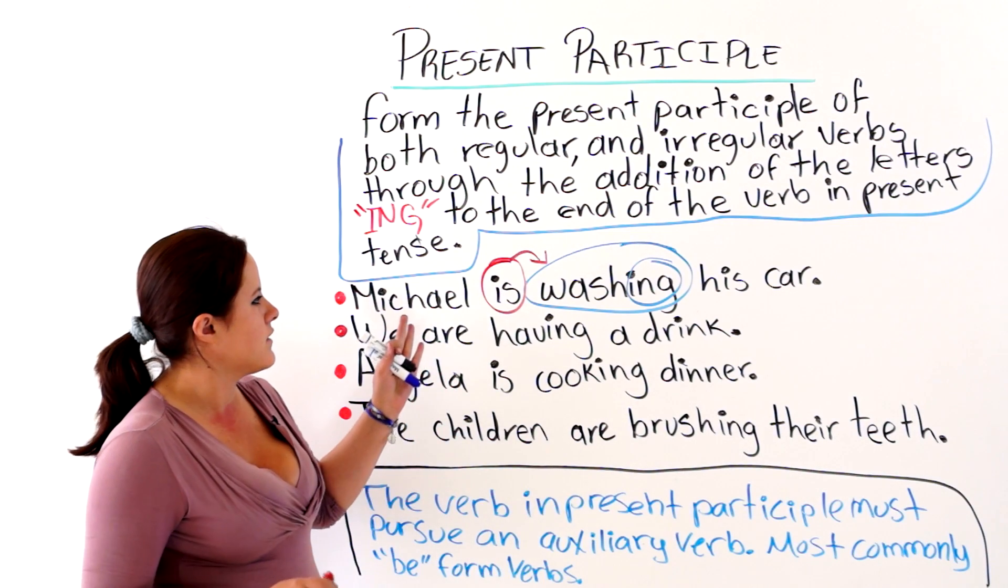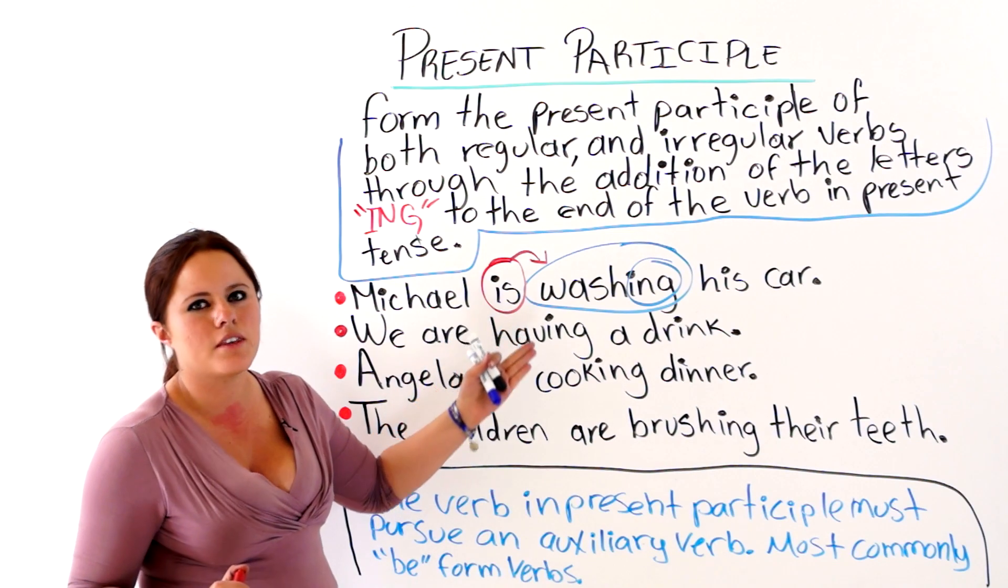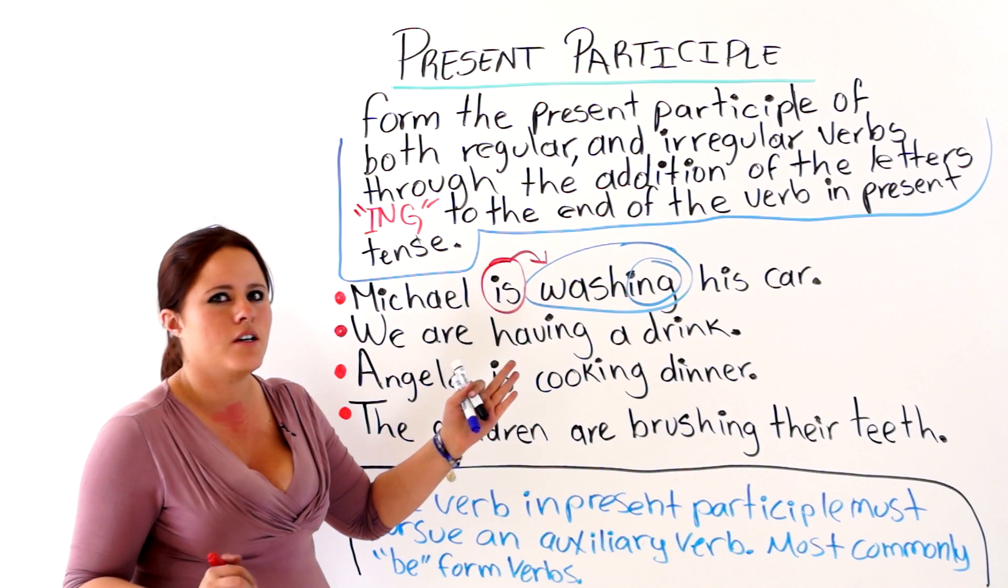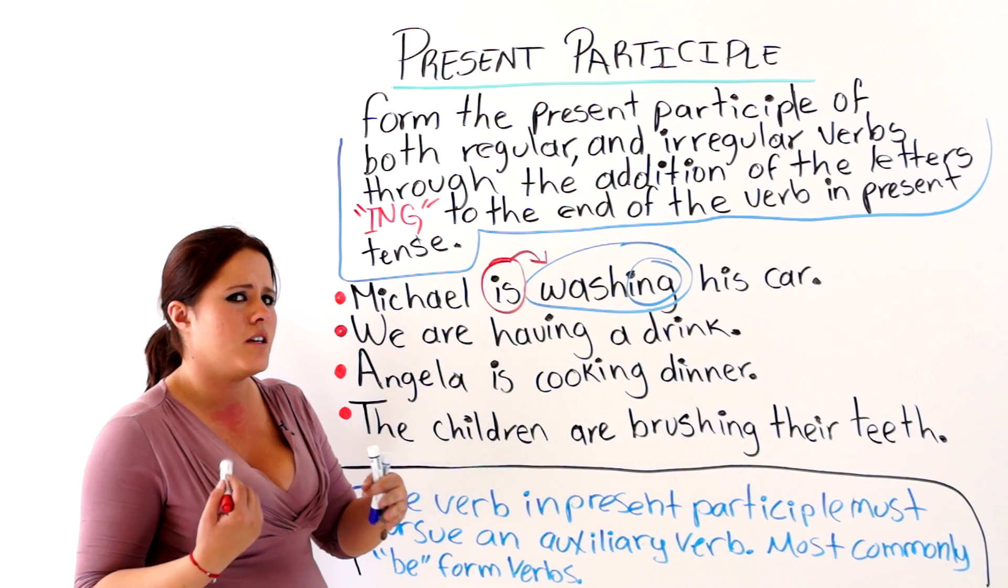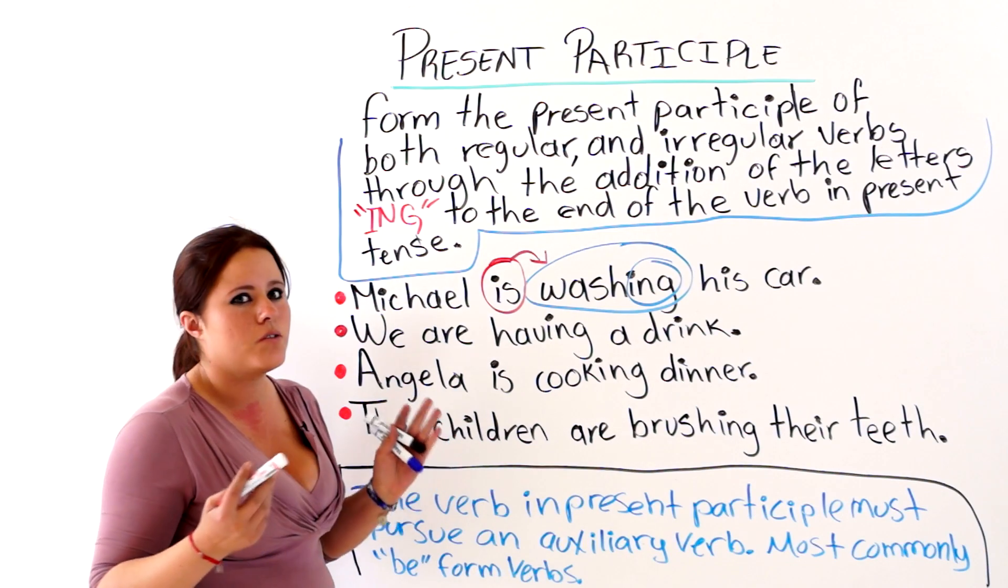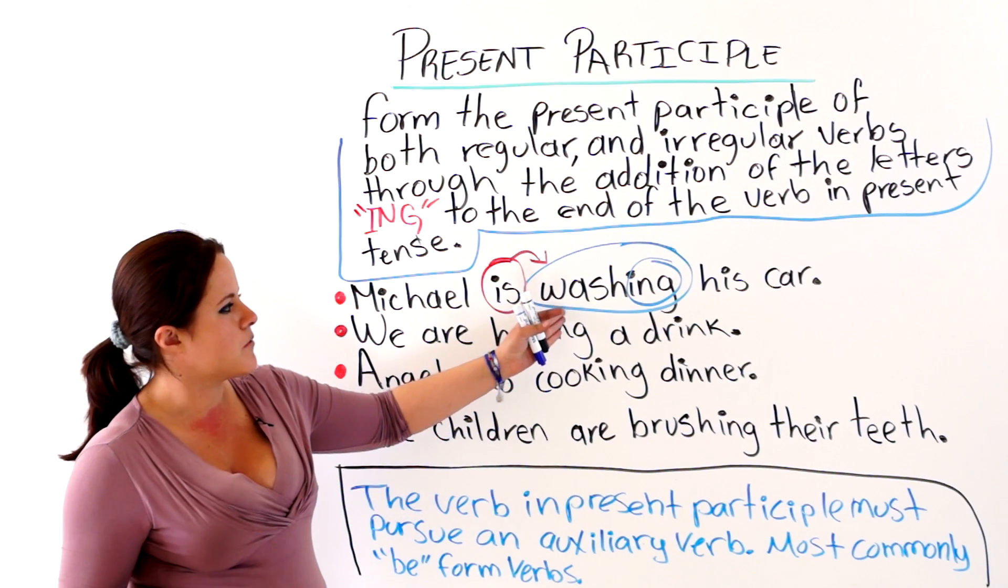You could also see this as the present progressive, because they are telling you that action is taking place now. He is washing his car. That he was doing it, and he is still doing it now.